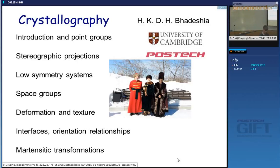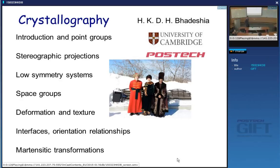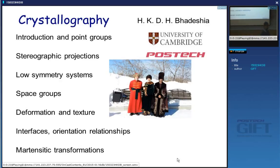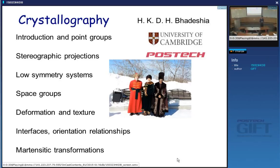Apologies for the delayed lecture — I only got back here about one hour ago from Siberia. Today, I'm going to describe in more detail about point groups. The purpose of the lecture is: supposing that you know the lattice parameters and you know the shape of the unit cell, how does symmetry influence where you put the actual atoms inside the cell? Because the position where you locate the atoms will determine how many atoms there are going to be in the unit cell.